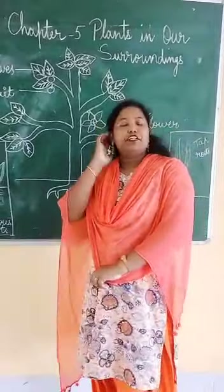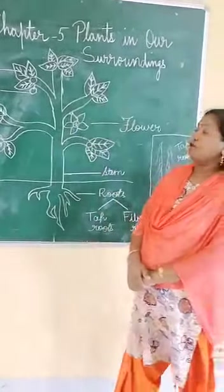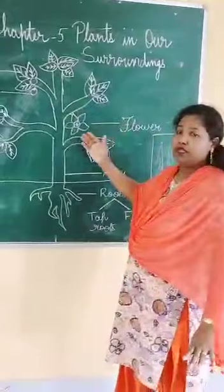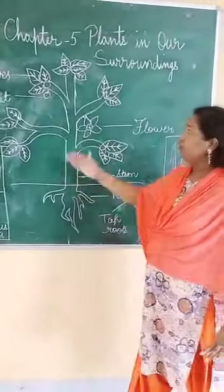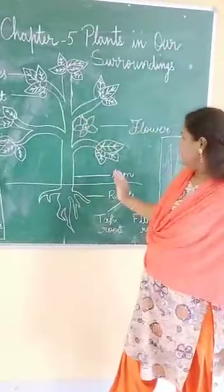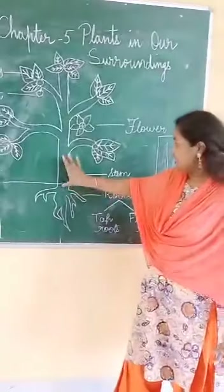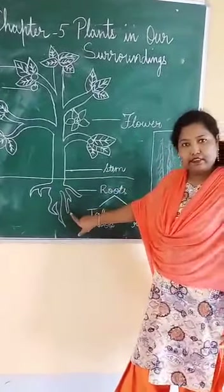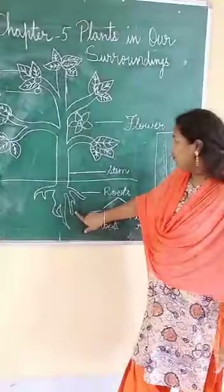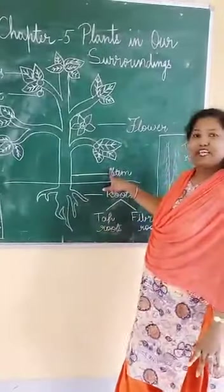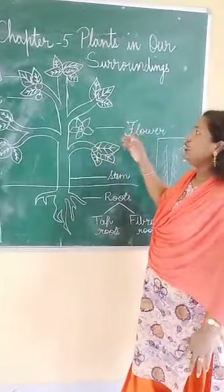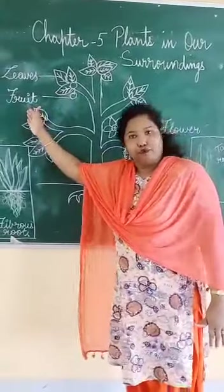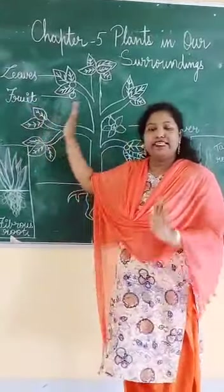Okay my dear children, I just showed you all the parts of a plant. Now look here — this is a plant. You can see the stem here, this is the stem, this is the root below the soil. This is the flower, and these leaves and flowers change into fruits. Okay, these are the parts.